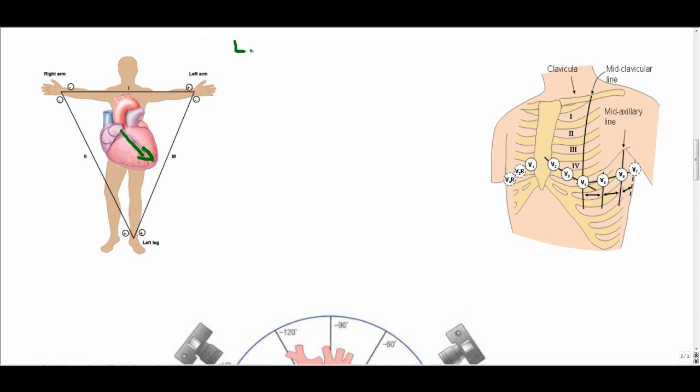The first thing to look at is the limb leads. Limb leads are essential for an EKG. They help us understand the main direction of depolarization in the heart and they tell us a whole host of information that we need to know in diagnosing heart pathology.